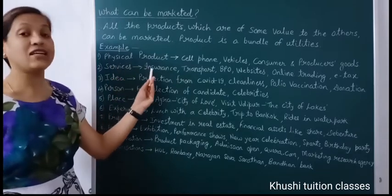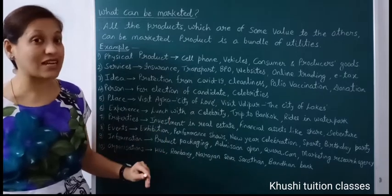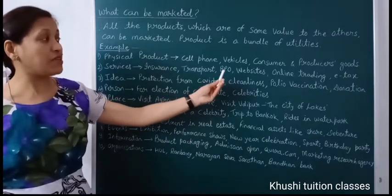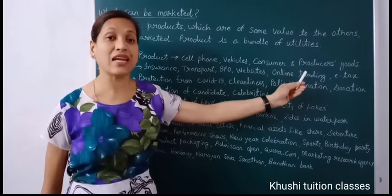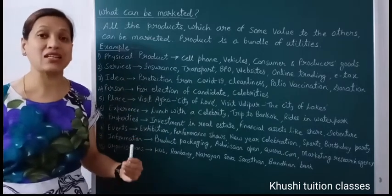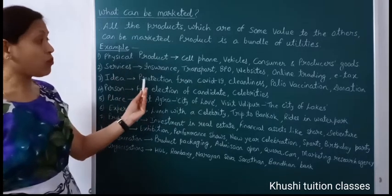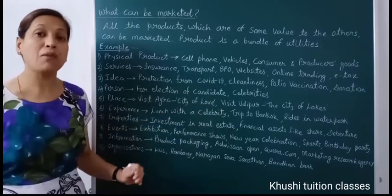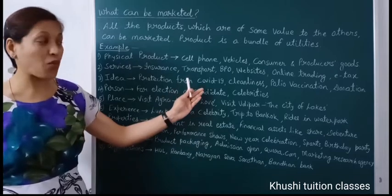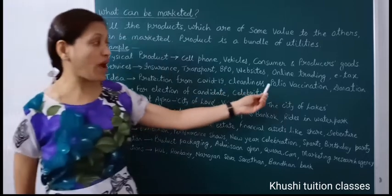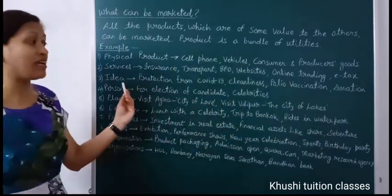The second is services — tertiary sector services like insurance, transport, banking, warehousing, trading, retailer services, wholesaler services, websites, business process outsourcing, online trading. Through websites we can trade and even pay taxes online. Professional services like doctor, CA, lawyer — all these services can be marketed. The third is ideas: protection from COVID-19 such as 'stay home, stay safe', cleanliness campaigns like Swachh Bharat Abhiyan, polio vaccination, family planning, donation, blood donation camp, Prime Minister Relief Fund — all these ideas can also be marketed.